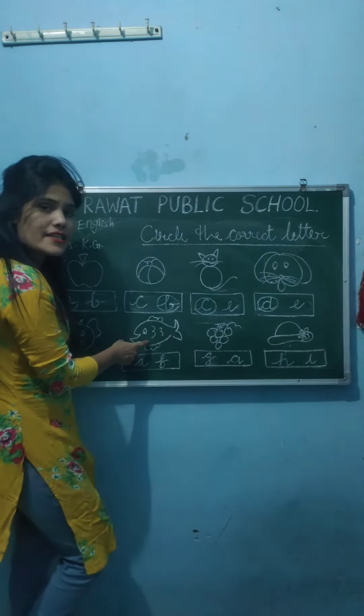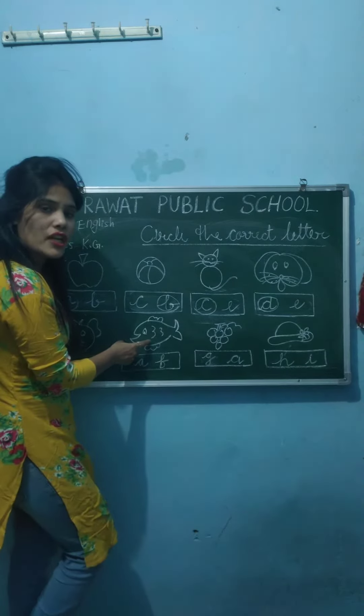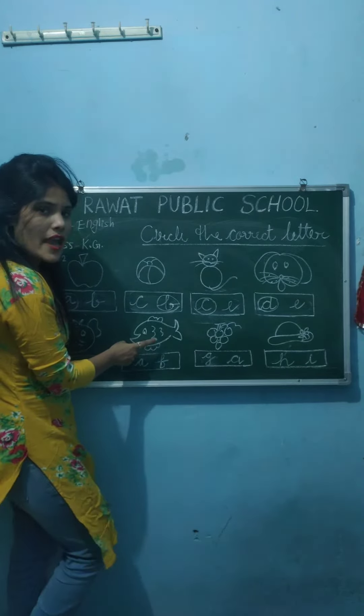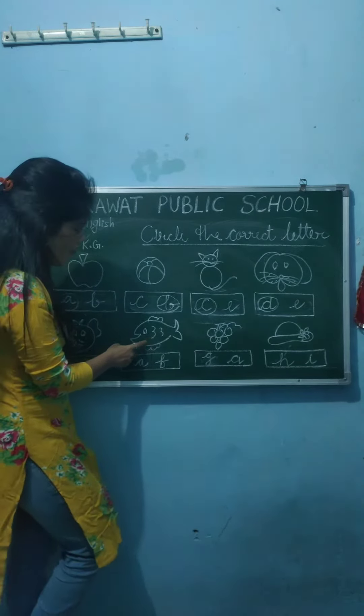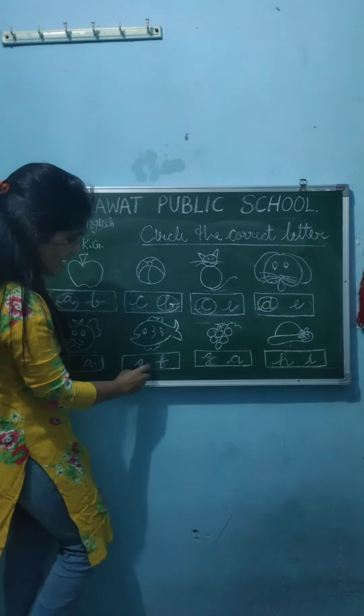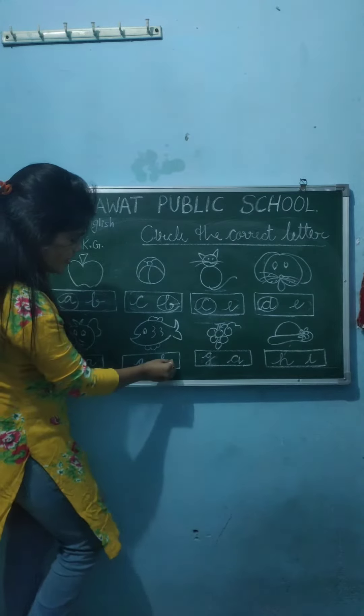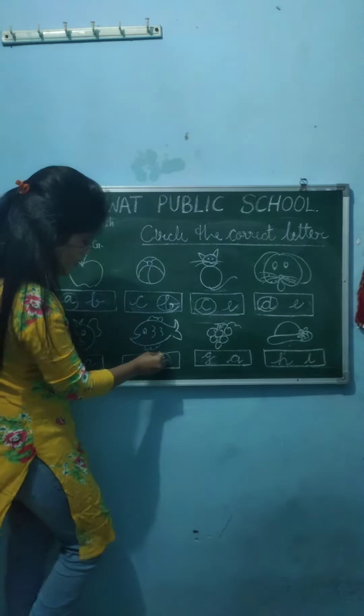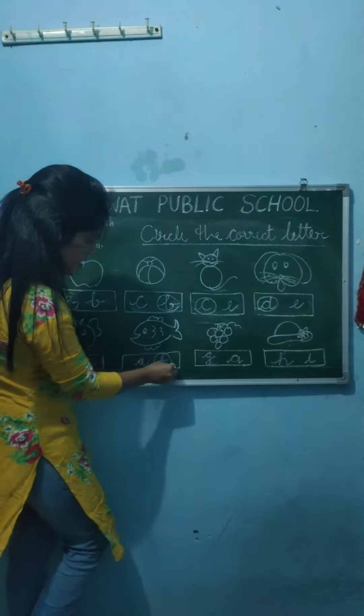Now what is this? This is fish. F for fish. F for fish. Which one is F? This one. Make a circle.